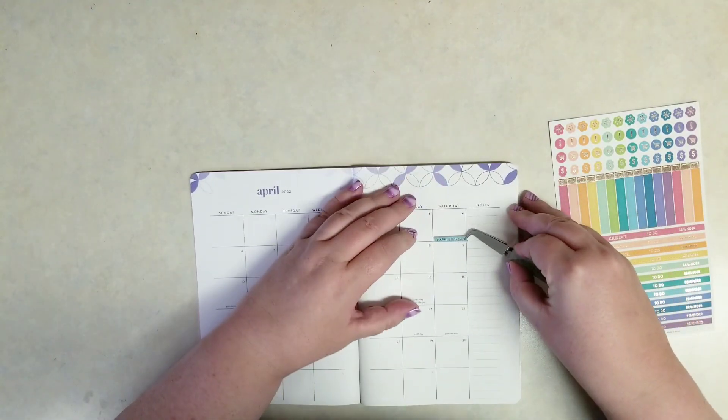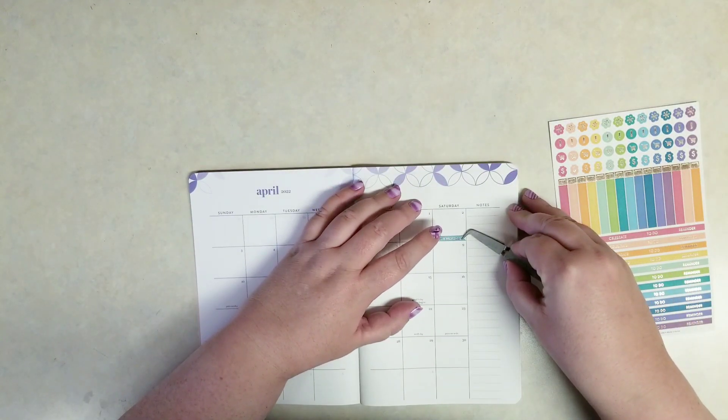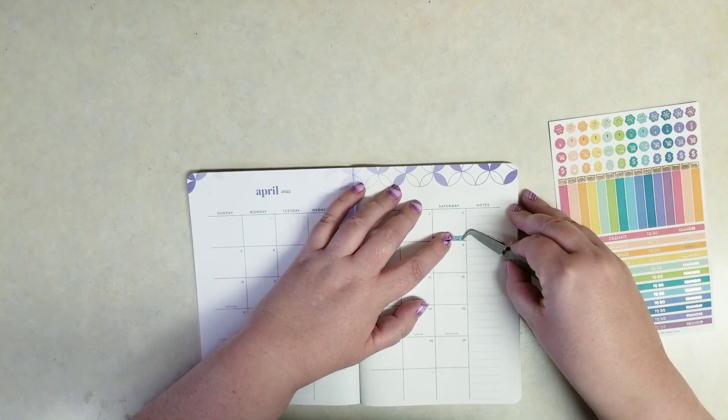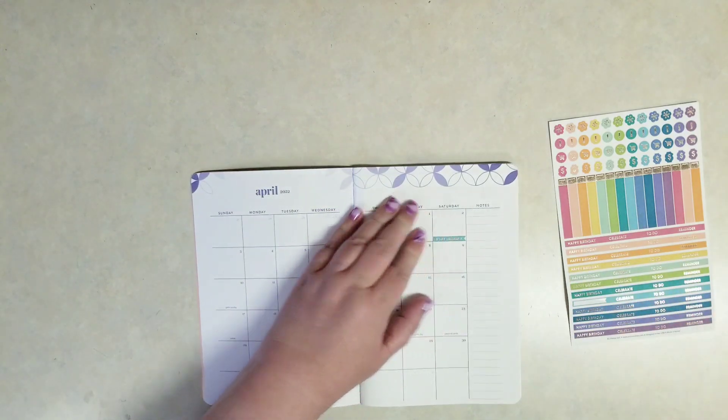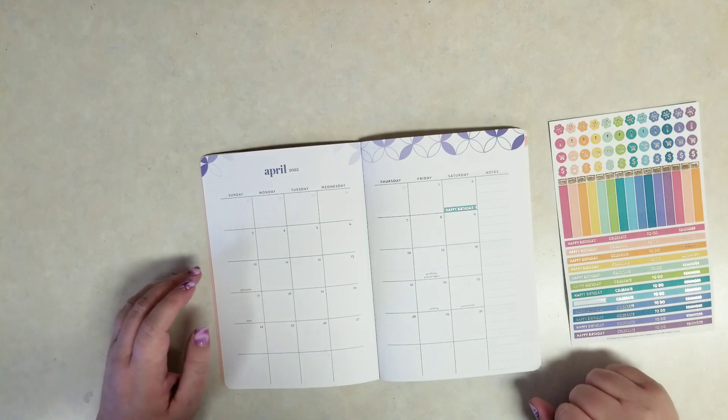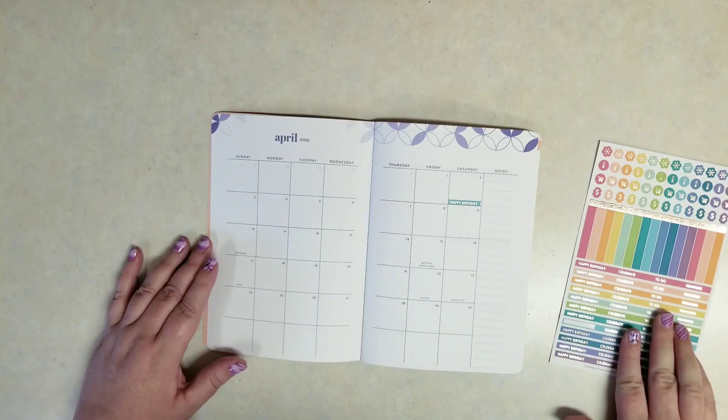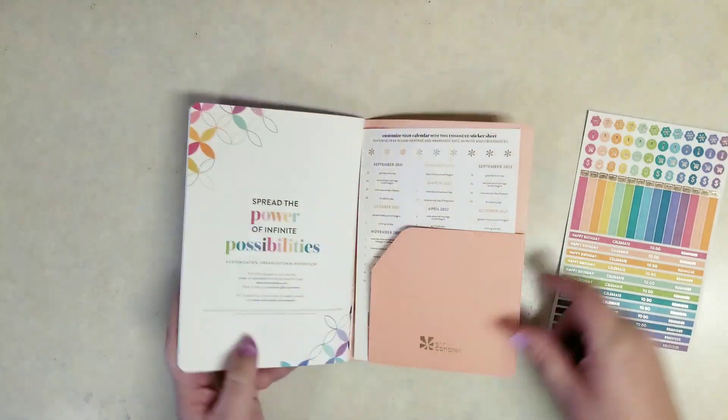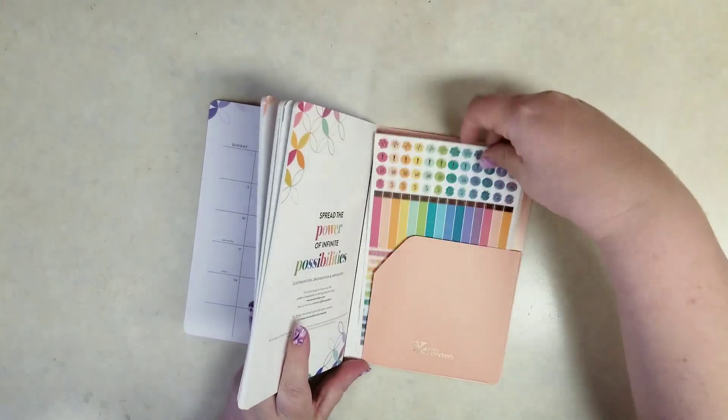Now these are just about the entire width of the calendar monthly box. There we go. All right, and then let me just tuck those in for now.